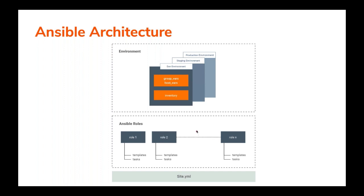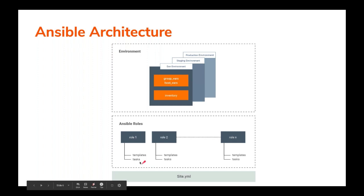In each role we have a set of templates — these are files from the product which are parameterized to apply values based on your environment. We also have a set of tasks, which includes everything needed to achieve the required end state of the managed node. There we have a main.yml and a custom.yml — the main.yml contains all the profile-specific tasks, and anything you want to add you can add to the custom.yml. Extending and customizing is just a matter of adding your code to the custom.yml.